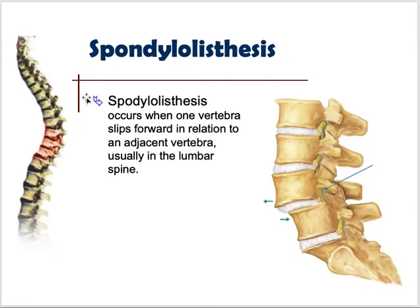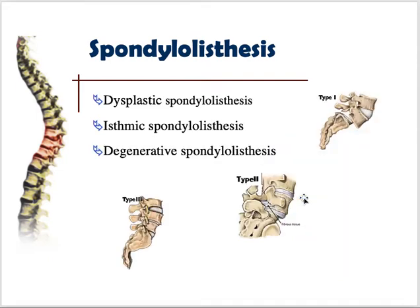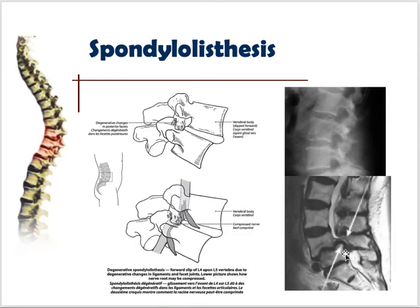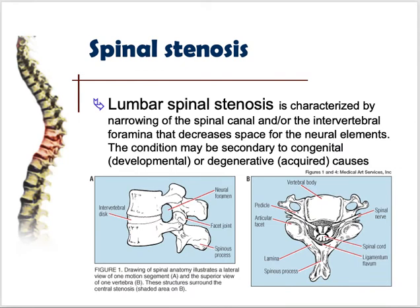Spondylolisthesis is when one vertebra slips forward on its adjacent vertebra — the slipped vertebra is not in line with the others. This causes compression of the nerve root. There are different types: Type 1 dysplastic, Type 2 isthmic, and Type 3 degenerative spondylolisthesis.